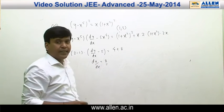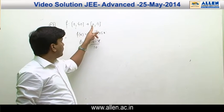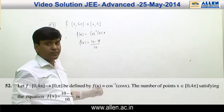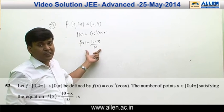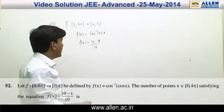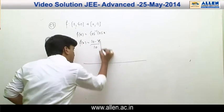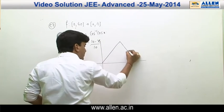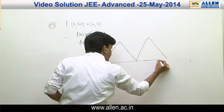f is given from [0, 4π] to [0, π] and f(x) = cos⁻¹(cos x). We have to calculate the number of solutions of f(x) = (10 - x)/10. Sketching the graph of cos⁻¹(cos x) for 0 to 4π, we get a triangular wave graph.